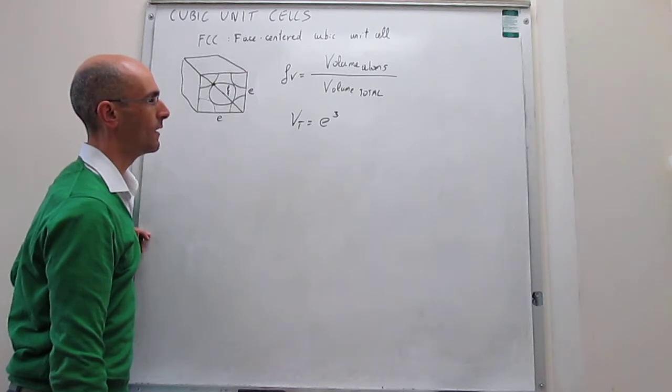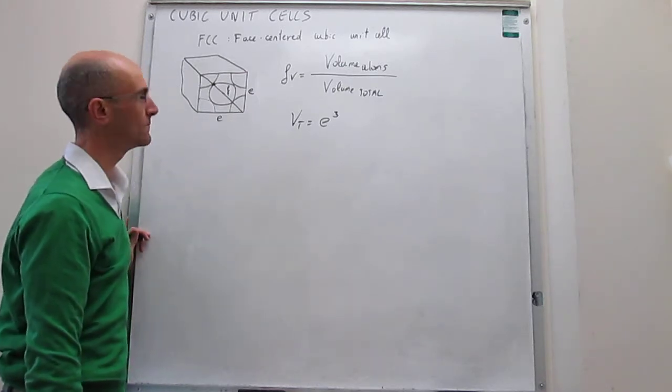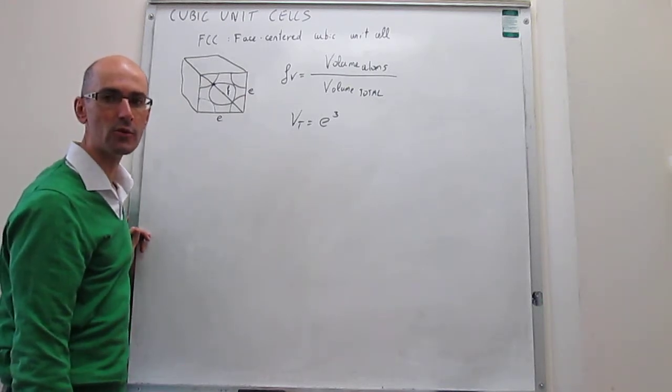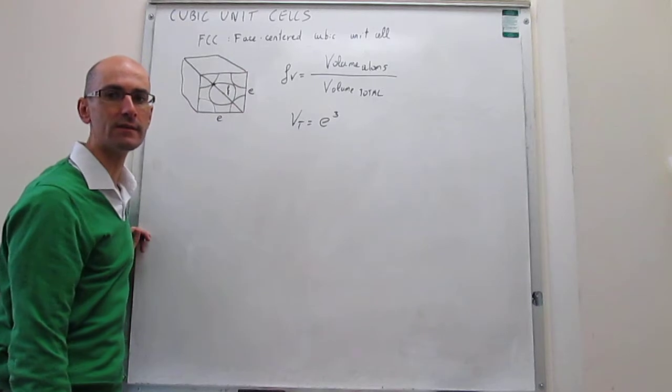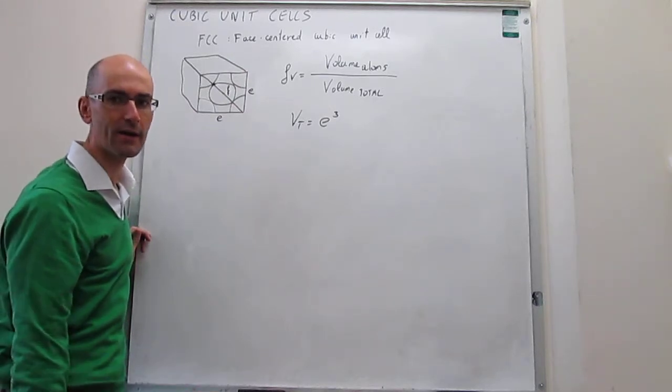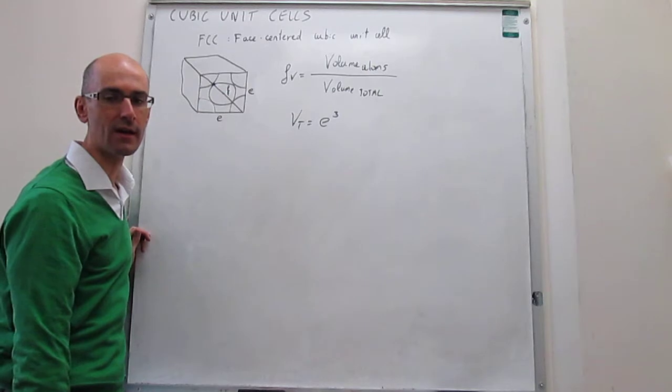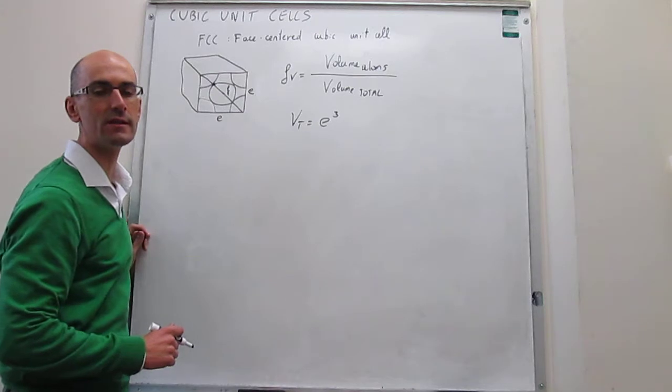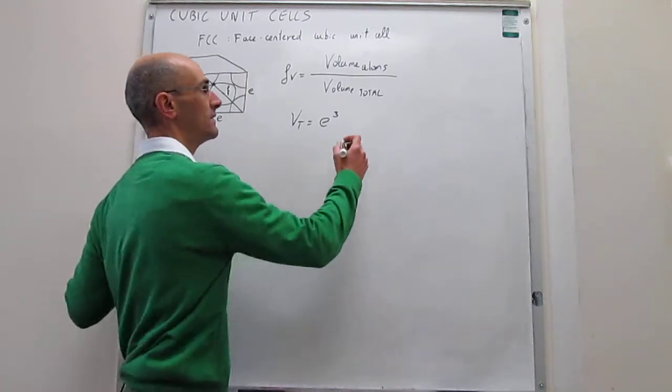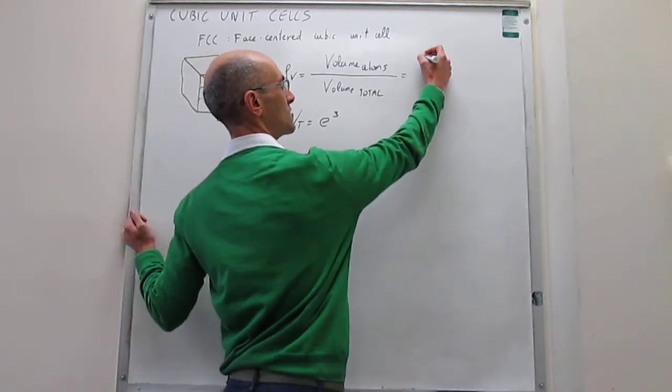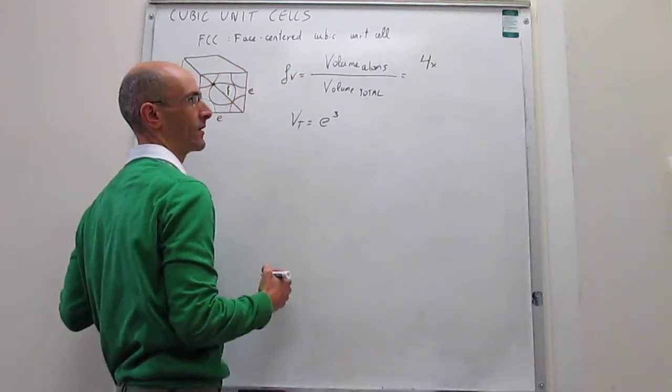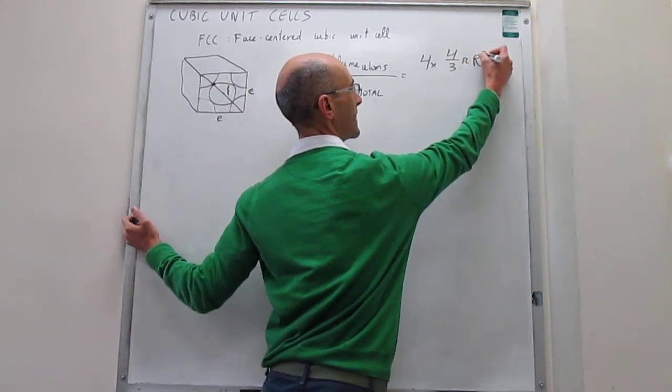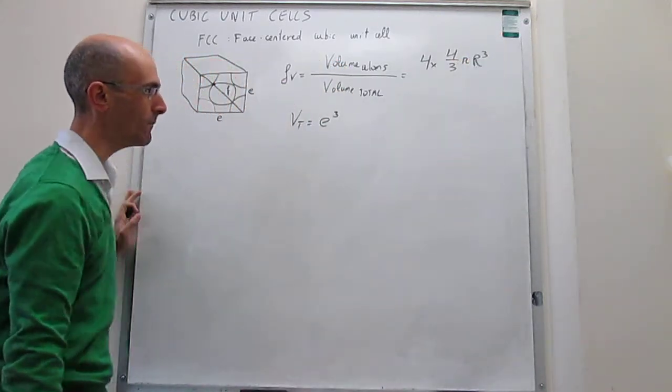And then we have to calculate what is the volume occupied by the atoms. We know that the atoms, we're considering that they're spheres. So we know that the volume of the sphere is equal to 4/3 π and then the radius of the sphere cubed. Because there's four atoms in the face-centered cubic unit cell, then the volume occupied by the atoms is going to be 4 times the volume occupied by one atom, which is 4/3 π and then the radius of the atom cubed.